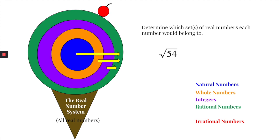Let's look at one more example: the square root of 54. If you simplify that, you get 7.348… and it just keeps going with no pattern — it never stops or terminates. Therefore it's irrational, and if a number is irrational, it's automatically not any of the other categories. That sums up your real number system.